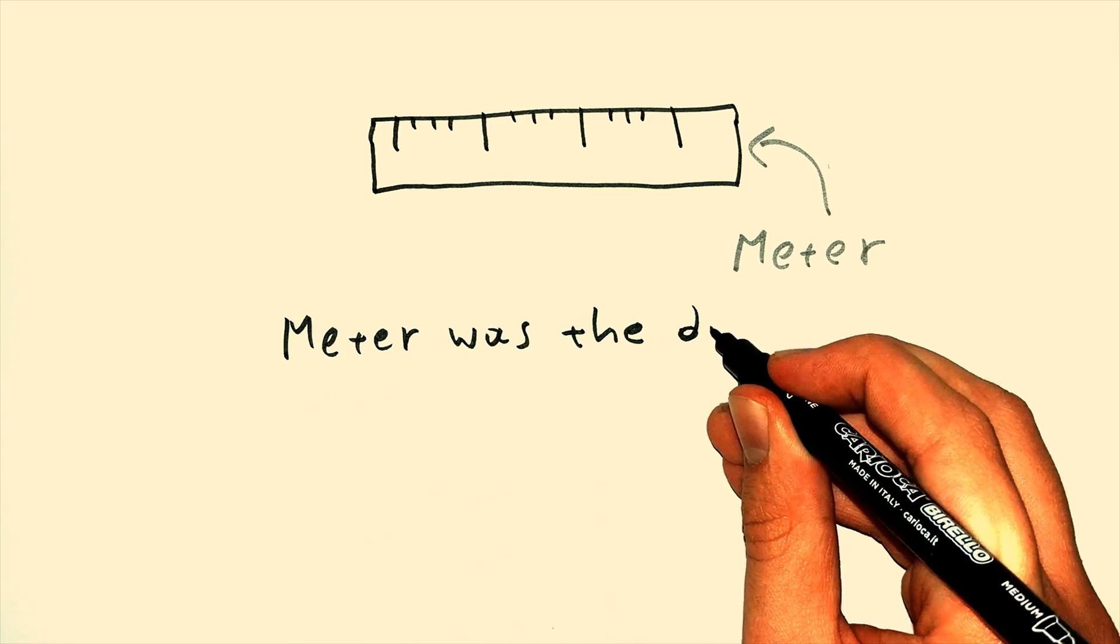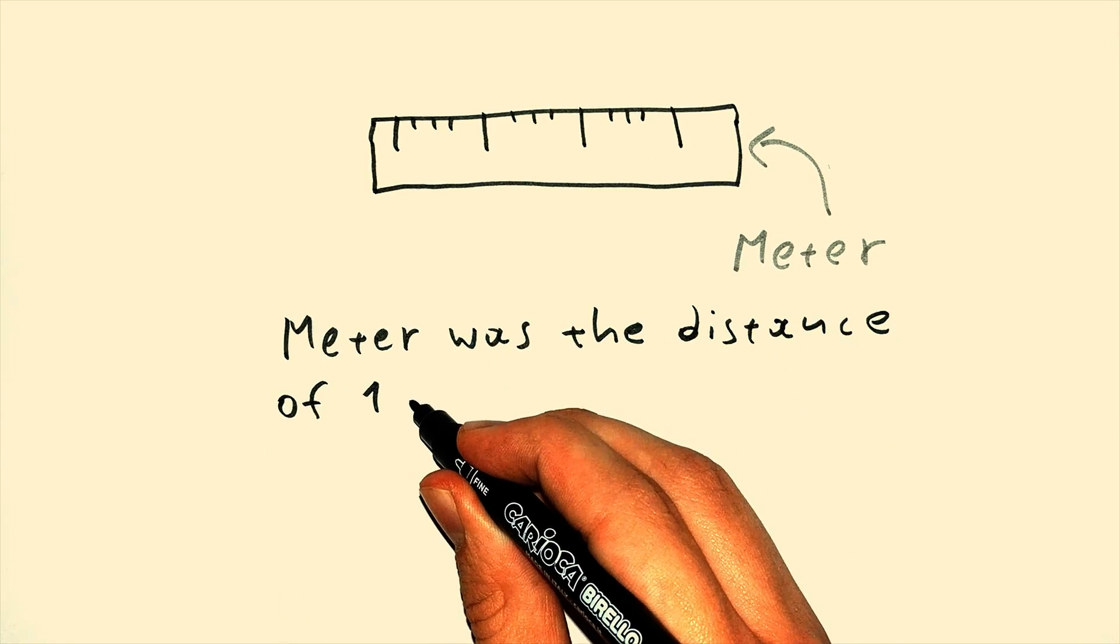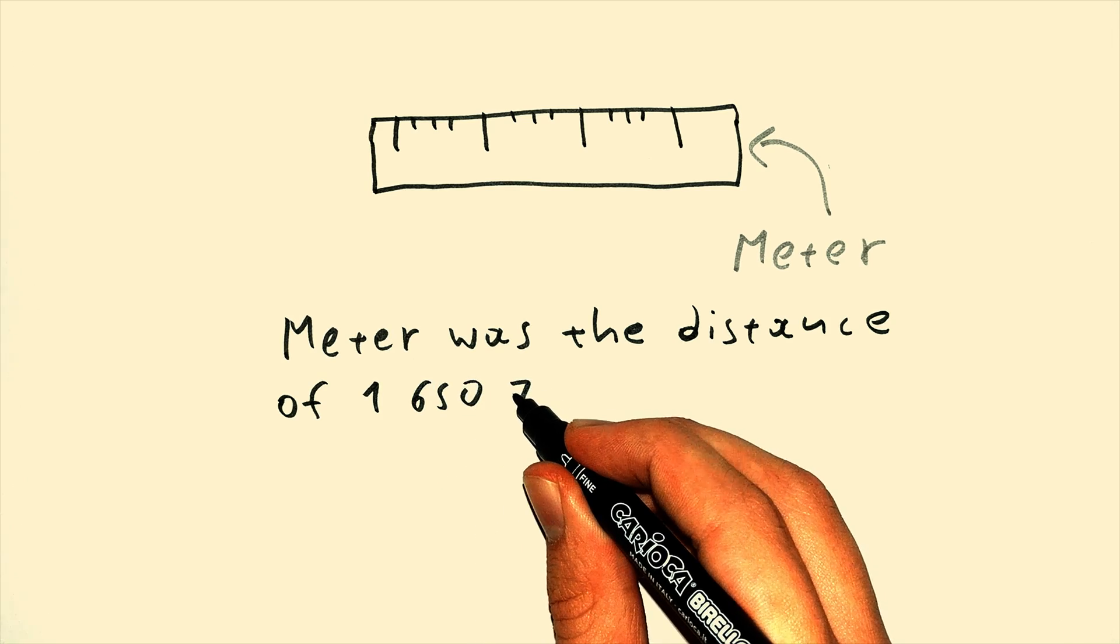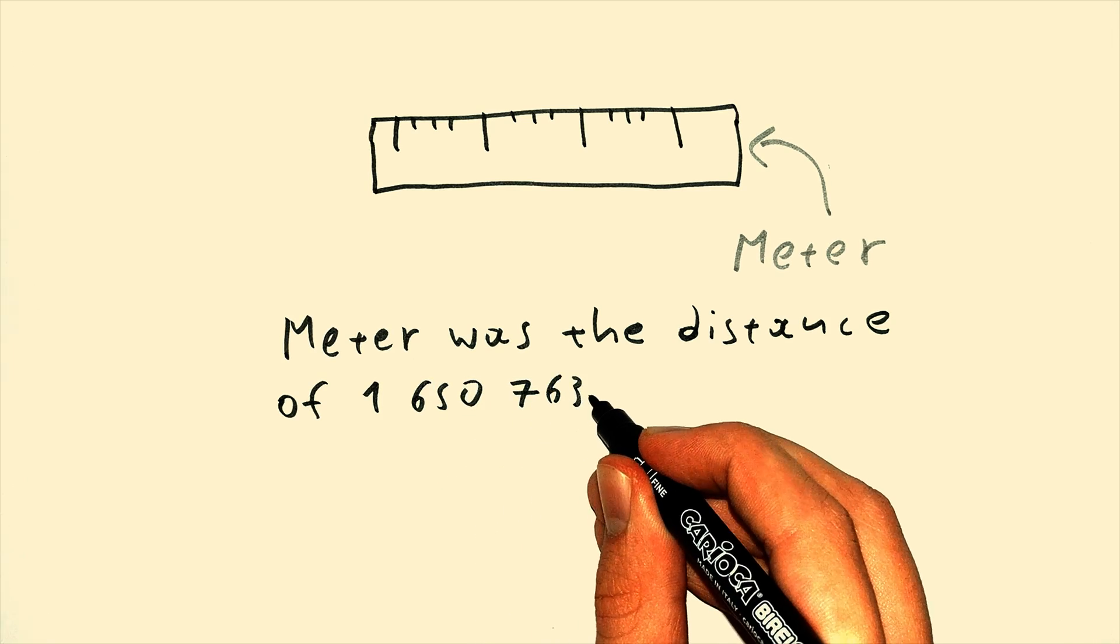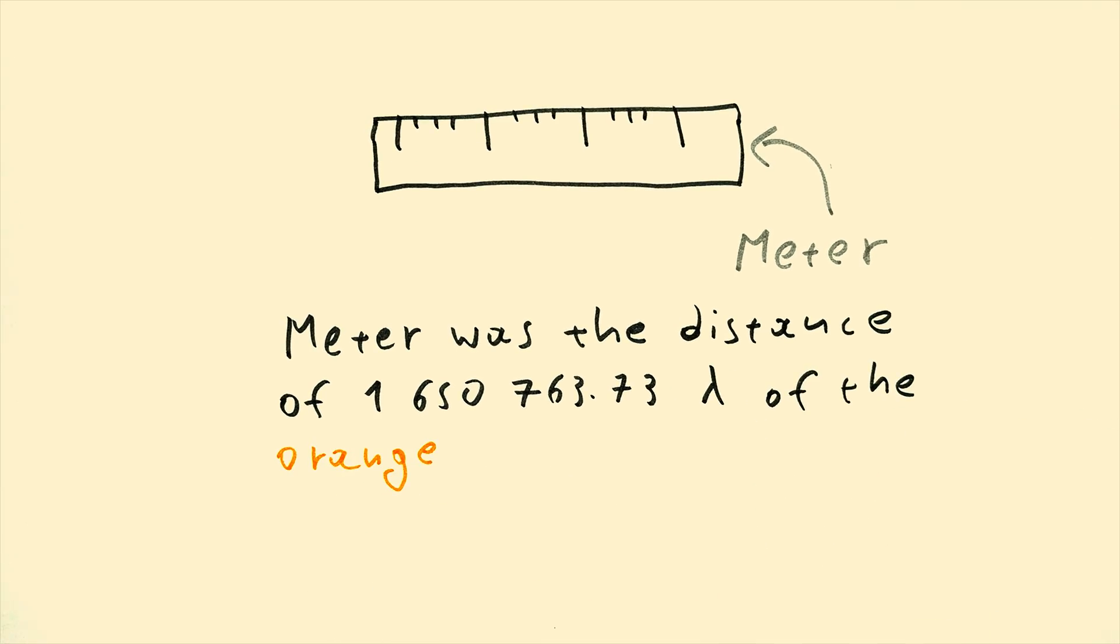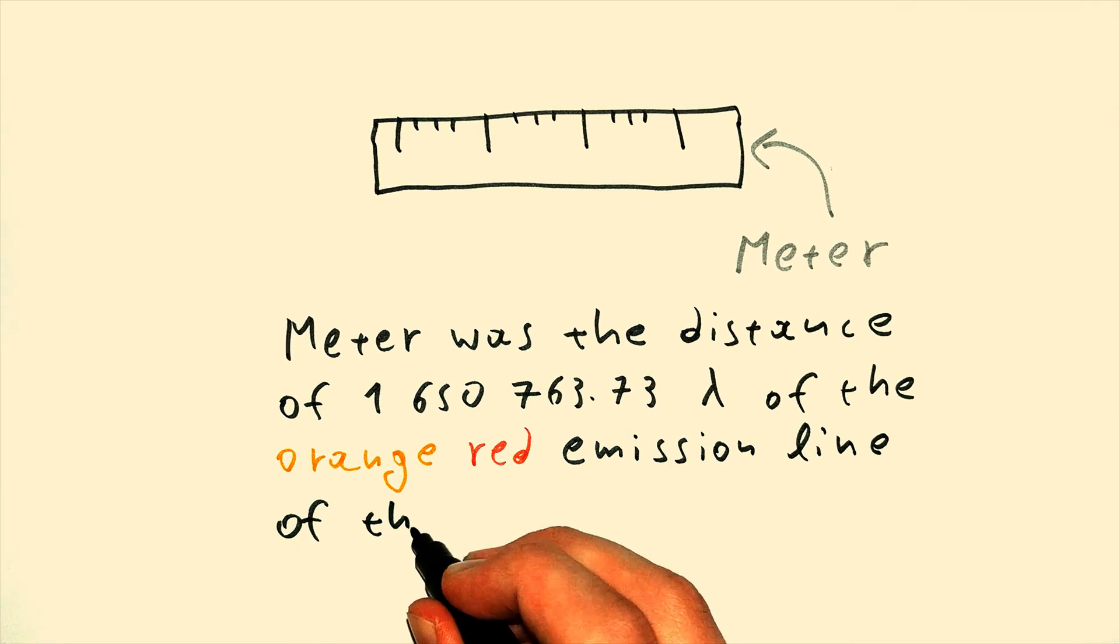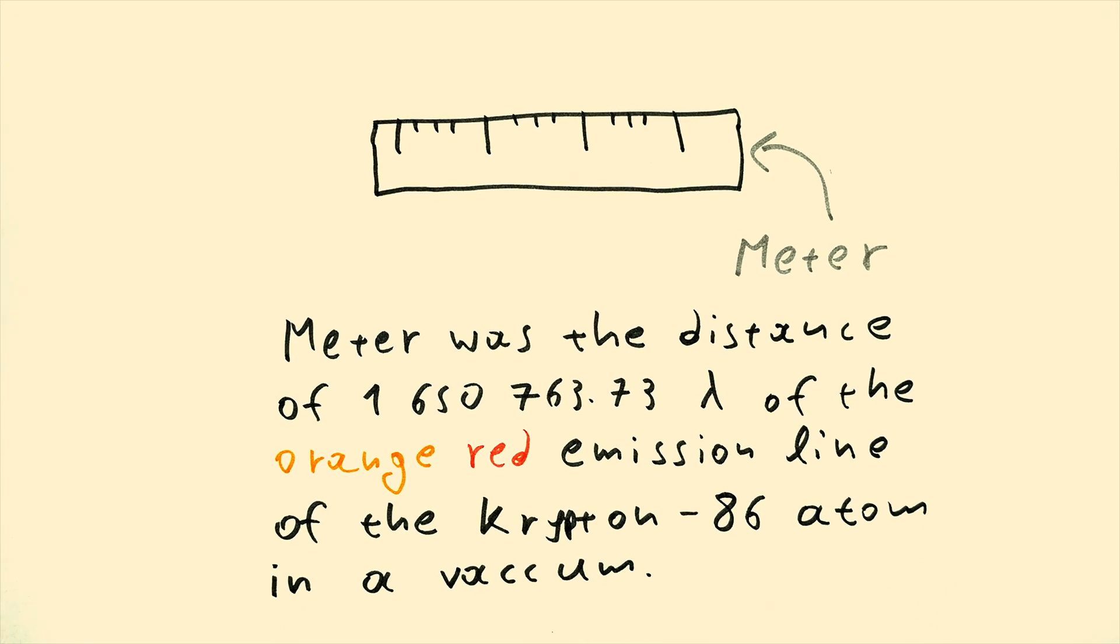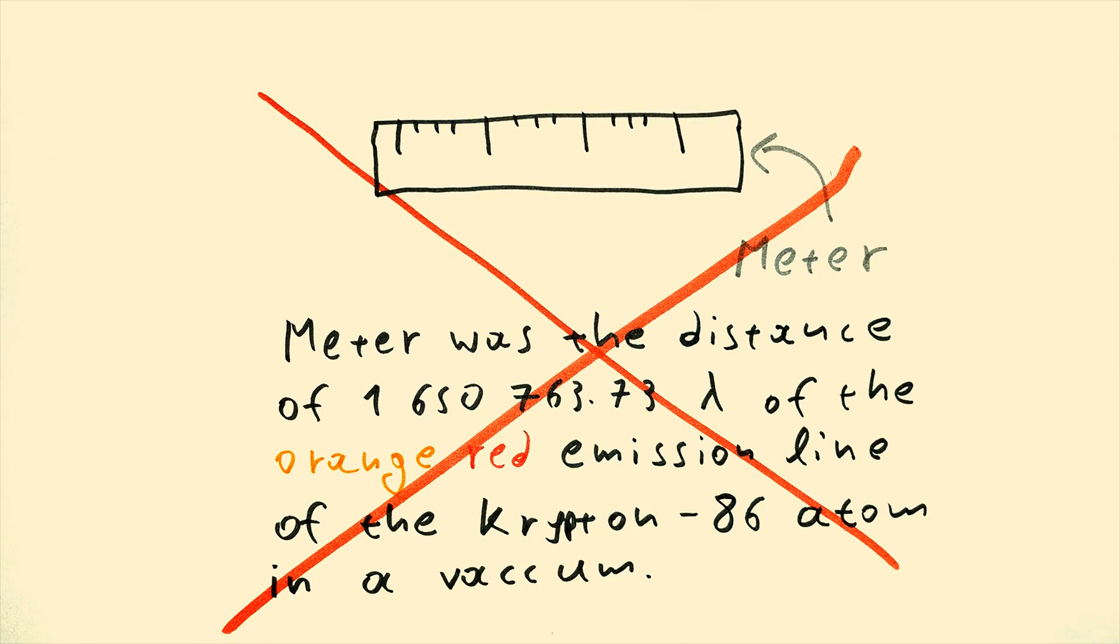is because the definition of the meter at that time wasn't precise enough. At that time, meter was the distance of 1,650,763.73 wavelengths of the orange-red emission line of the Krypton-86 atom in a vacuum. But that wasn't a good enough definition.